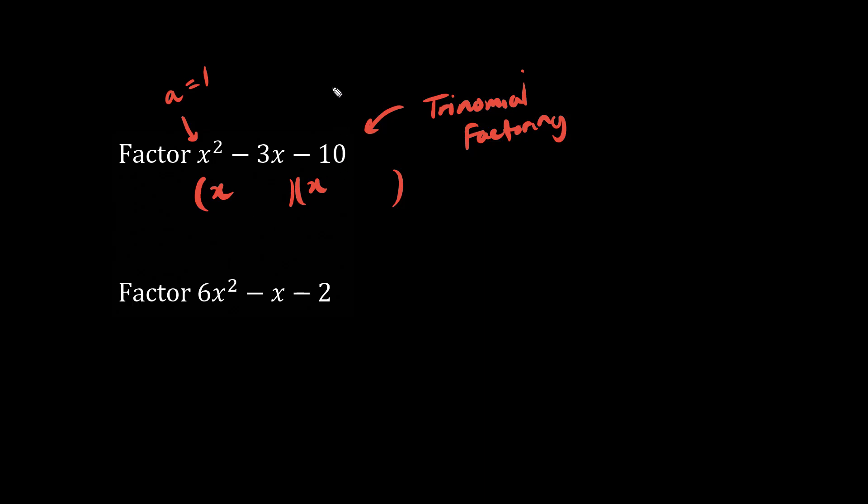Next, we have to think about the constant. Think of the number negative 10. What times what becomes negative 10? If you're not sure, we can list out all the possibilities. Just focus on the actual number. Forget the sign. 1 times 10 is 10, and so is 2 times 5.